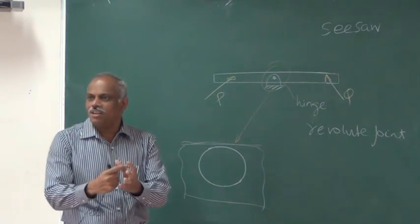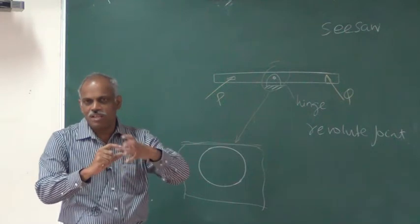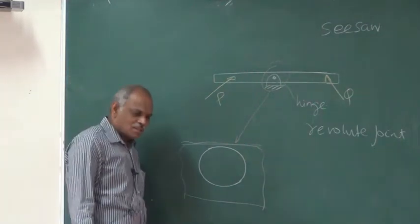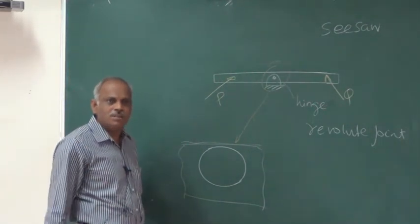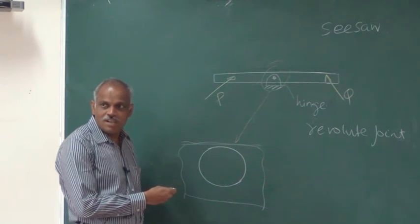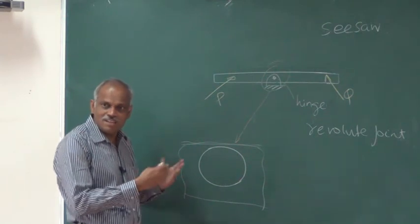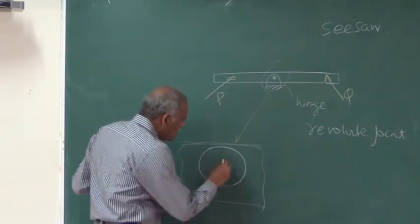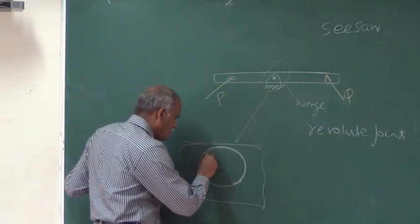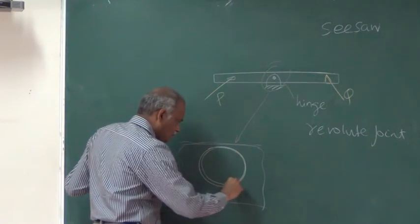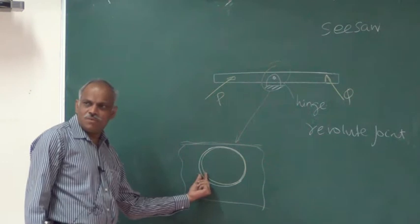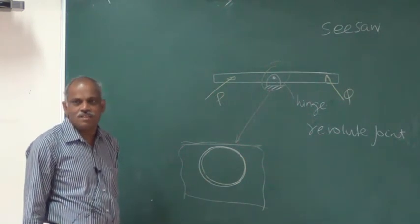If the clearance is too large, the joint will shake — it is supposed to only allow rotary motion but it will permit shaky motion. So the clearances are very, very small. For understanding or visualization, we exaggerate that clearance in diagrams, because otherwise you will not be able to see it at all.